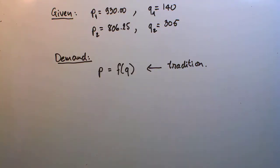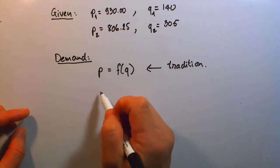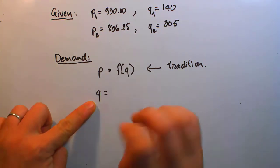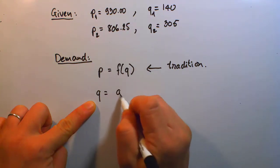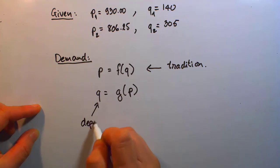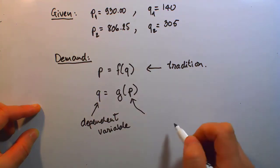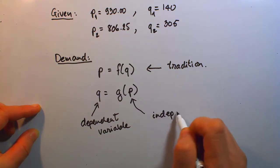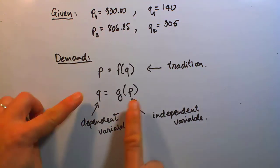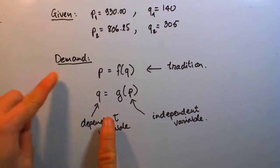There's still a small percent of time where you need to write your same demand relationship based on the same given information, but demand can also be written with Q as the function — sometimes we need to write demand as a function Q in terms of price, meaning we treat quantity as the dependent variable and P as the independent variable.